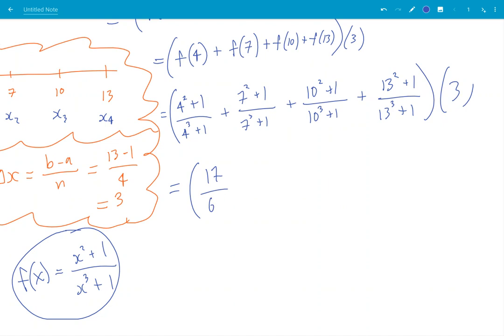So what do you get? 17 over 65 plus 50 over 343 plus 101 over 1001 plus 170 over 2197. This is all kind of a bit fuzzy, you're going to be using your calculators to sort this out. I'm not going to mess with that, so you plug all this into your calculator.